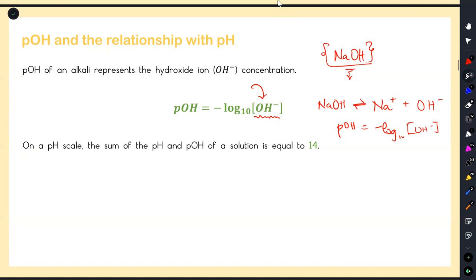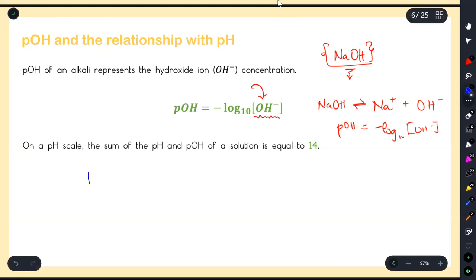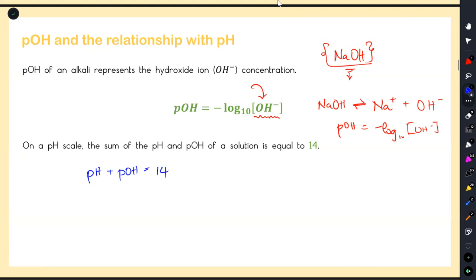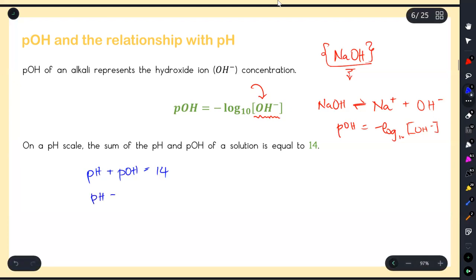Once you've found the pOH, you can find pH using this relationship: pH + pOH = 14. Remember the pH scale goes from 1 to 14. So if you need to find pH after calculating pOH: pH = 14 − pOH. This is how you find the pH of a strong base. Note these formulas only work for strong compounds - strong acids and strong bases.